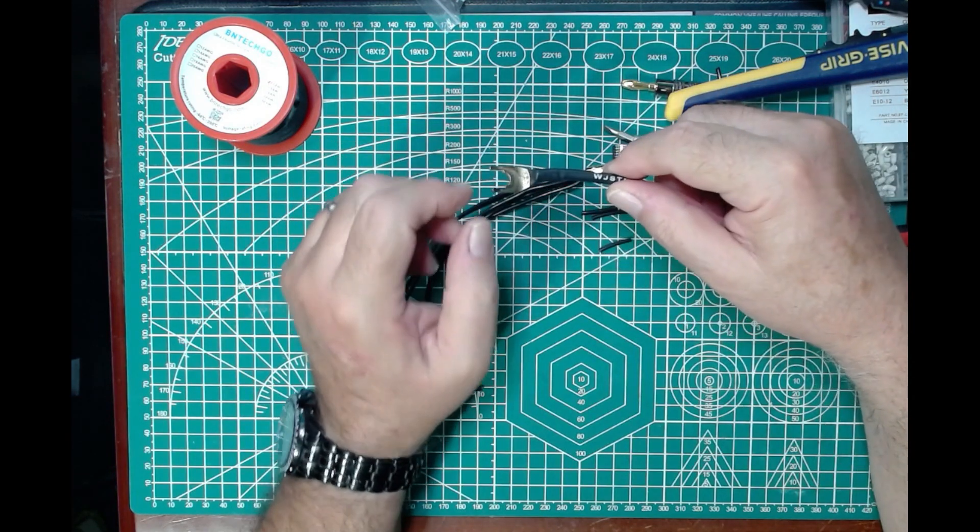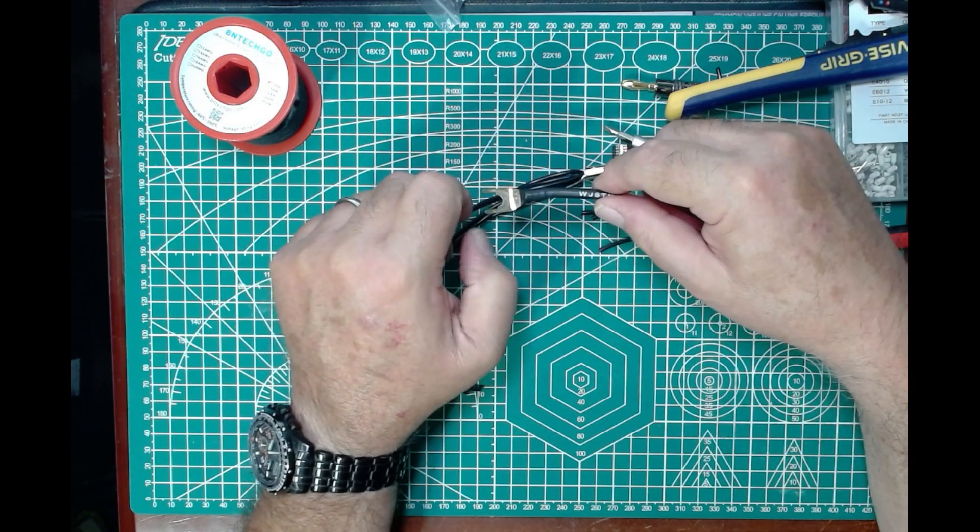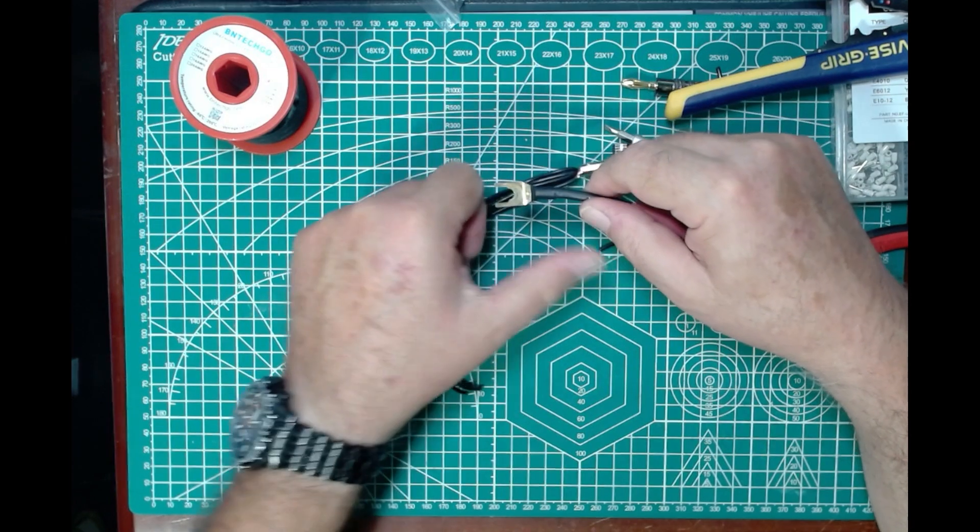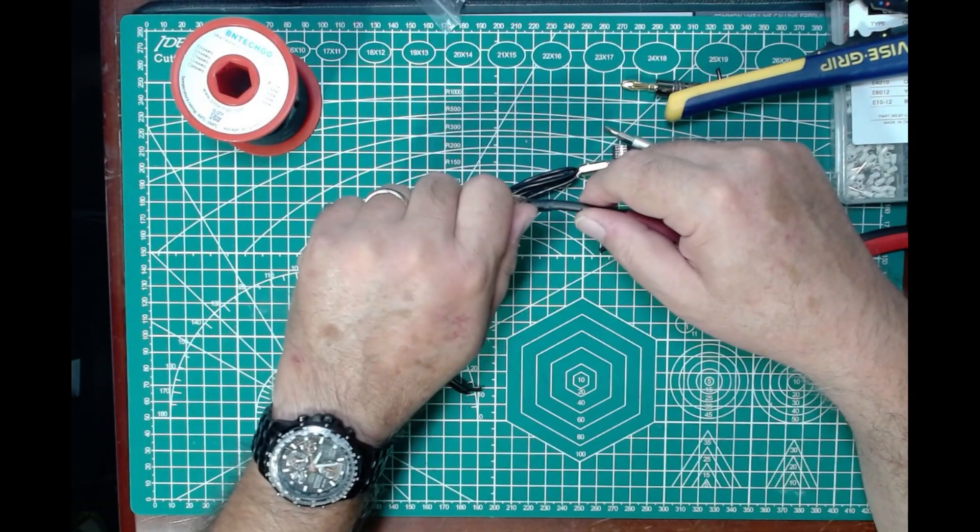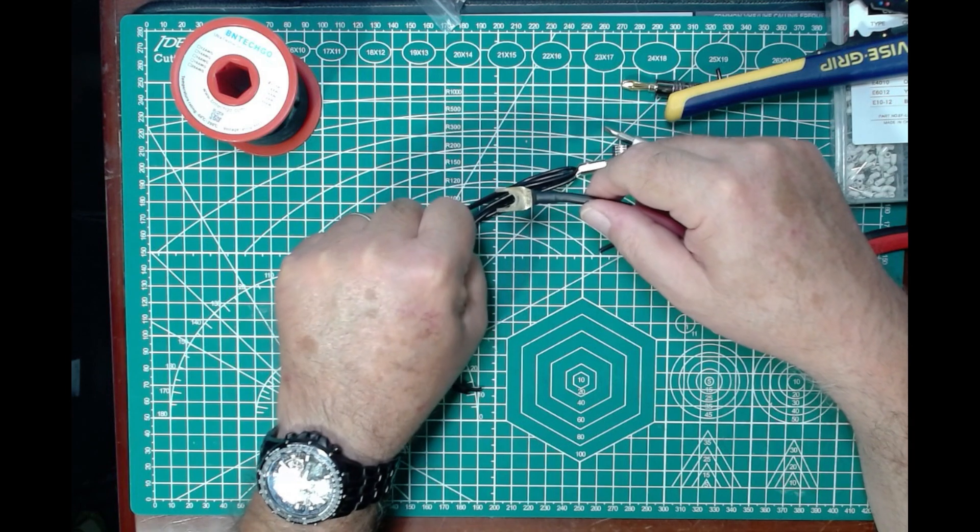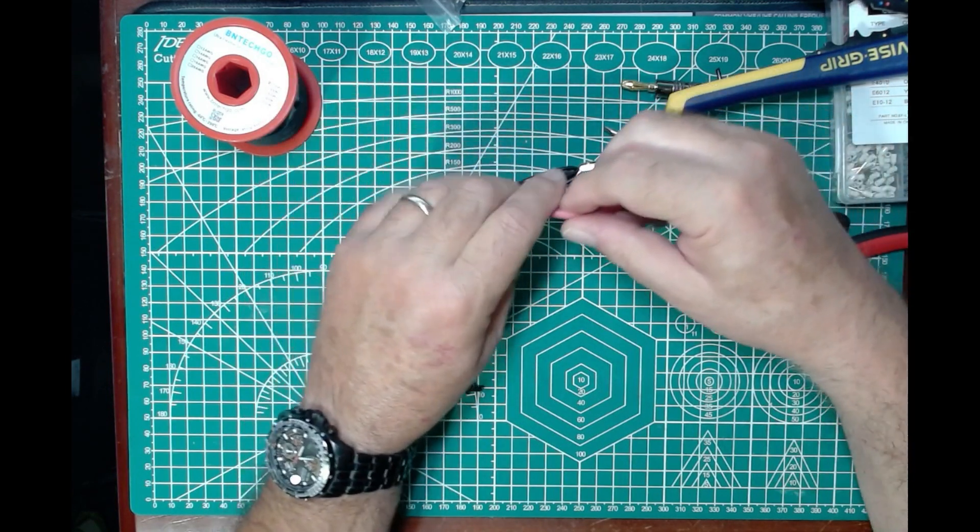So these things are pretty much not coming off. The beauty of this is, like I said, if one of these gets caught in a weed eater, it'll generally just snatch the radial out without pulling the antenna down.